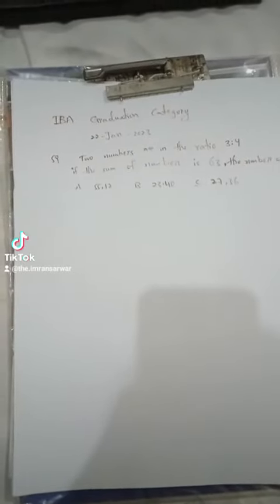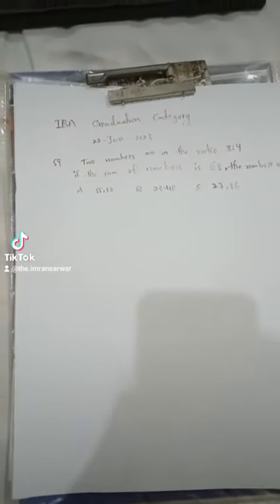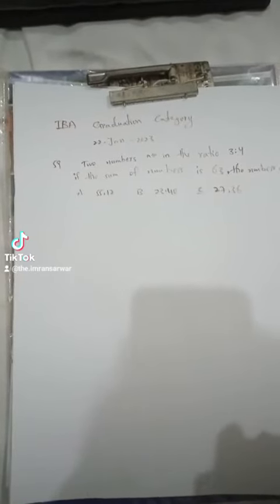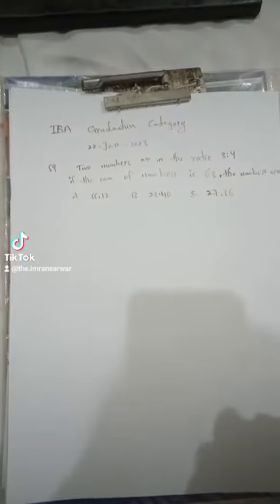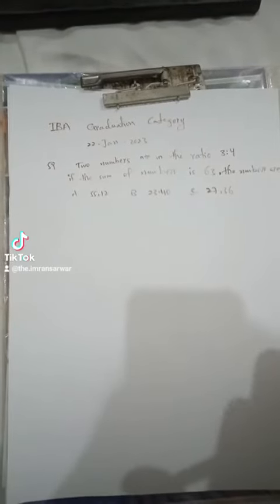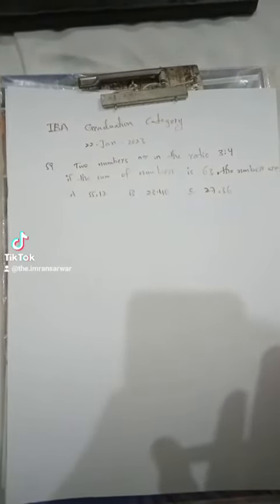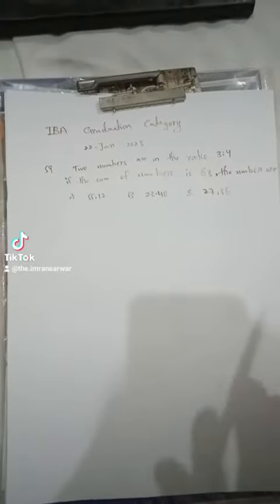IBA graduation category, question number 59: Two numbers are in the ratio 3:4. If the sum of the numbers is 63, find the numbers.